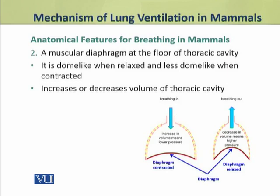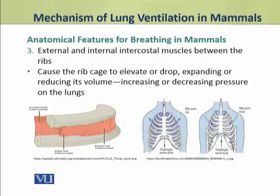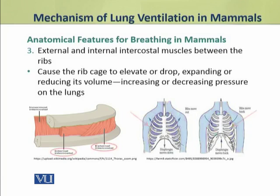The third anatomical feature facilitating breathing is the presence of external and internal intercostal muscles between the ribs. The muscles between the ribs are called intercostal muscles and they are of two types: external and internal intercostal muscles. Both these muscles play an important role in breathing because they cause the rib cage to elevate or drop, giving upward and downward movement to the rib cage. As a result, they expand or reduce its volume, and pressure on the lungs is increased and decreased rhythmically.